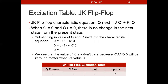For the JK flip-flop, we look at its characteristic equation: Q in the next state, or Q+, is equal to J·Q̄ or K̄·Q. That was our characteristic equation of the JK flip-flop derived from its state table.